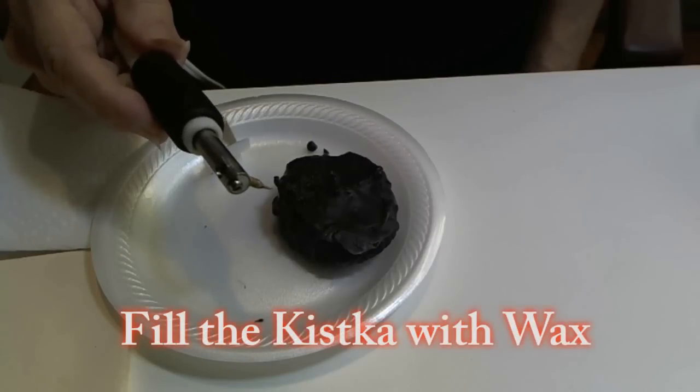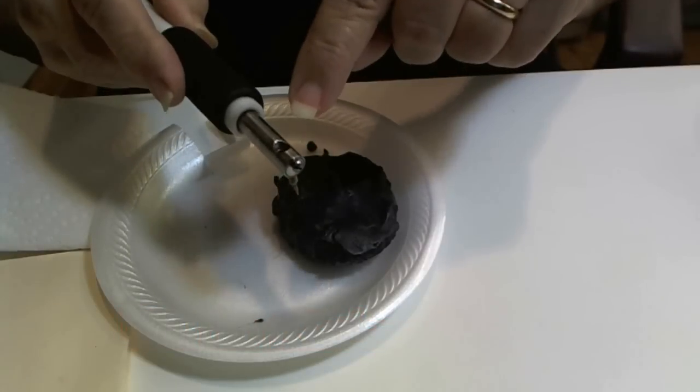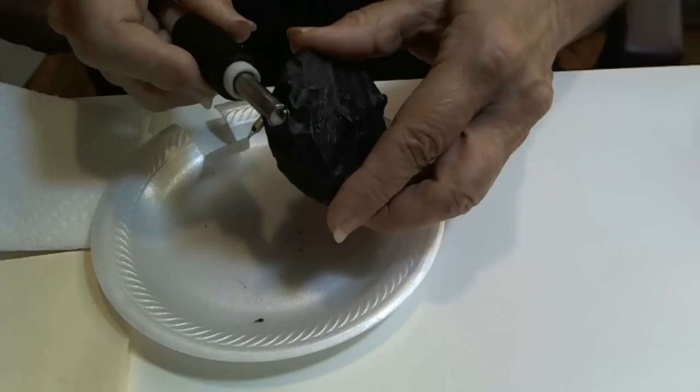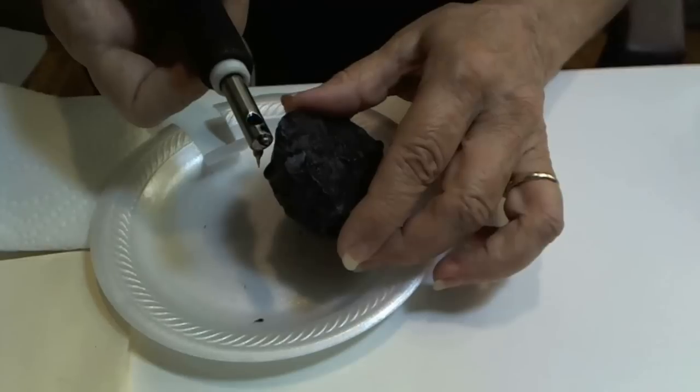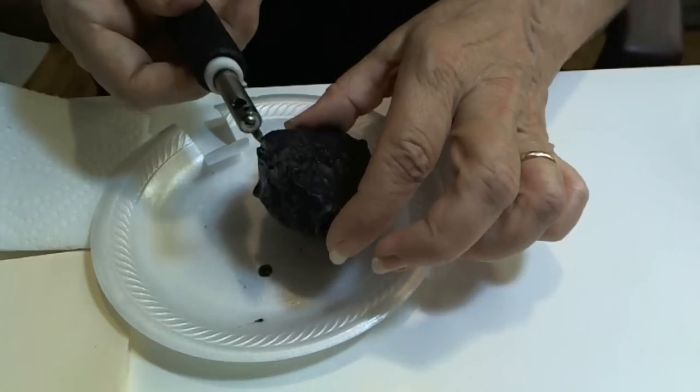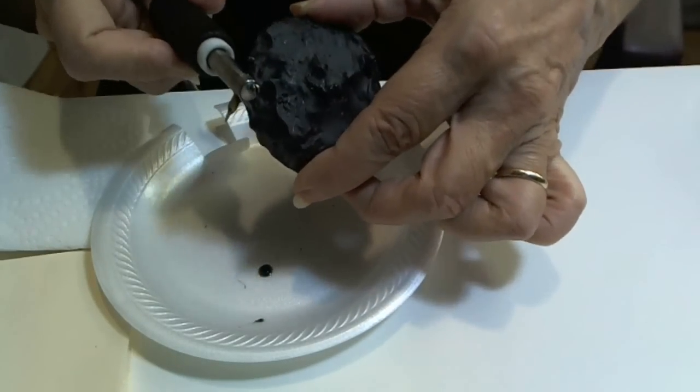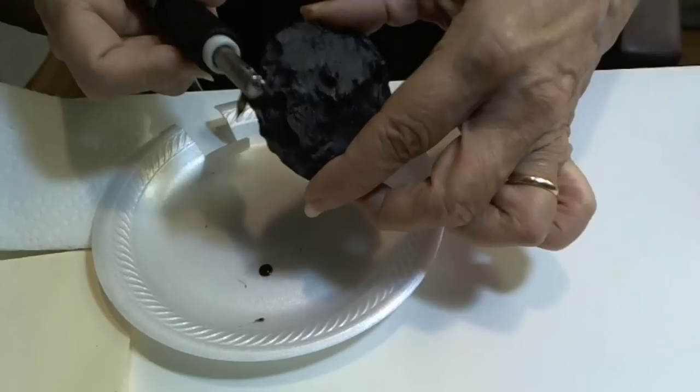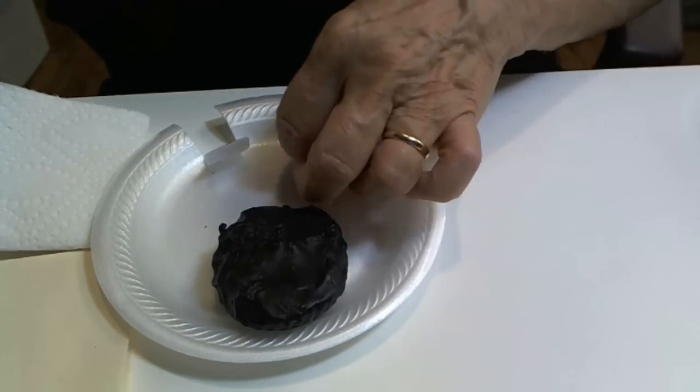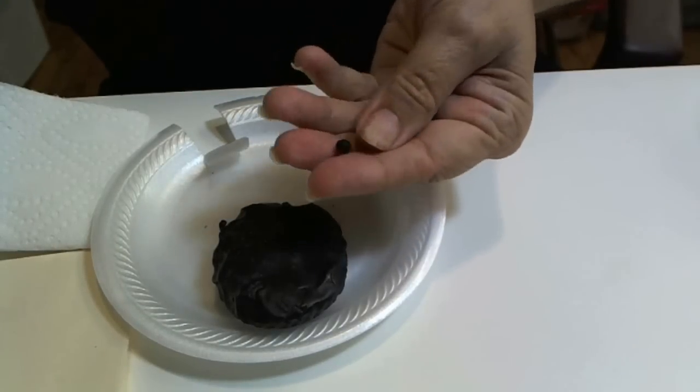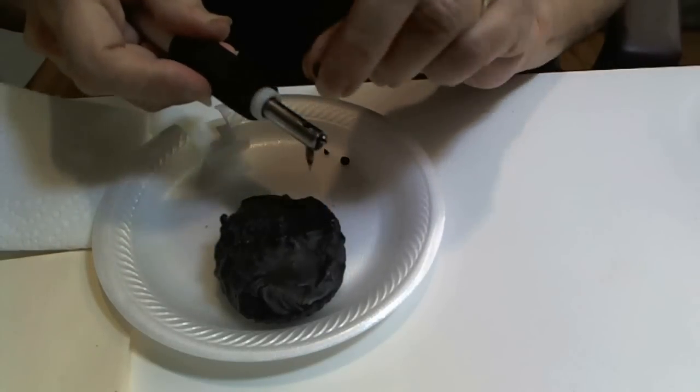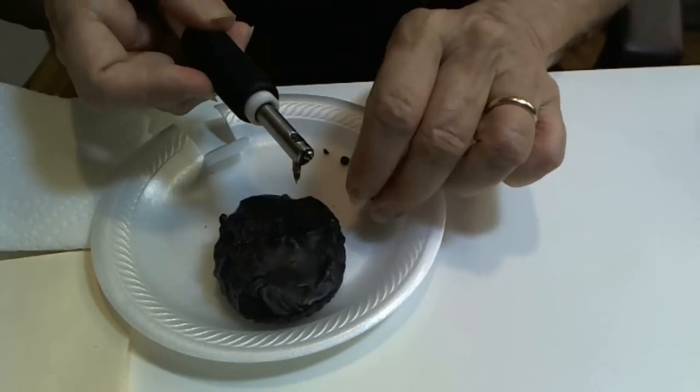I now want to show you how I fill my funnel up in the kiska with the wax. I can take the kiska and just lay it against the wax, and because it's hot, it melts the wax inside the little funnel part. It's best not to try and force it into, let it just melt into the funnel. Many people use spaghetti wax or they will make little pellets with their wax and just drop it into the funnel part.